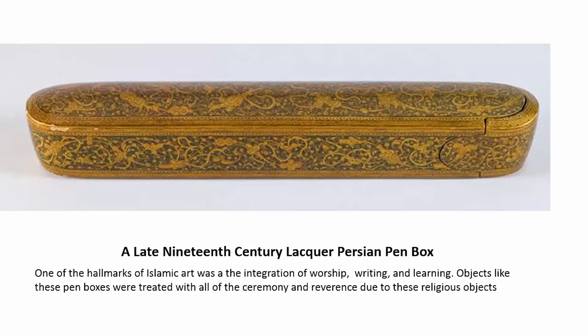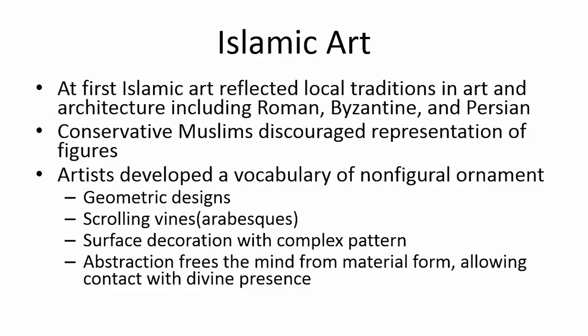This is a late 19th century lacquer Persian pen box — another art object. One of the hallmarks of Islamic art is this integration of worship, writing, and learning. For this reason, objects like pen boxes and ink wells are treated with all the ceremony and reverence we see in any religious object. Early Islamic art did reflect local traditions in art and architecture — we see Roman forms, Byzantine forms, and Persian forms. We'll see Roman architecture inside the Dome of the Rock in a few minutes.